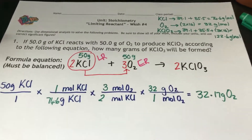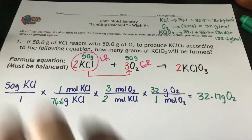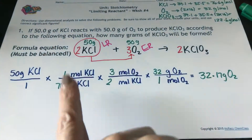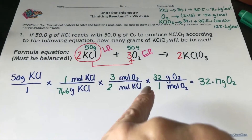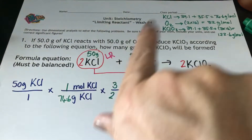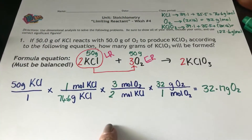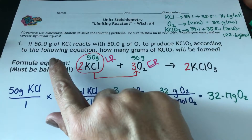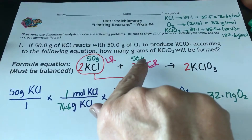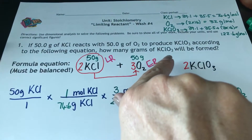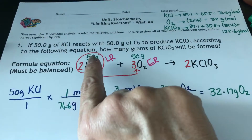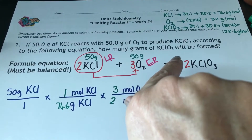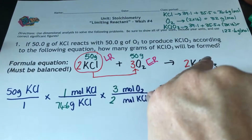In the previous video we used this calculation to find out which one was the limiting reactant and which one was the excess reactant in this chemical reaction. So that means we've answered the first part — which one is the limiting reactant. So now we need to find out how many grams of potassium chloride would be formed.